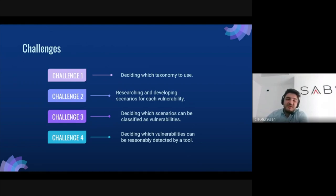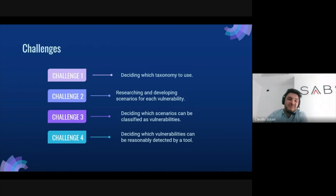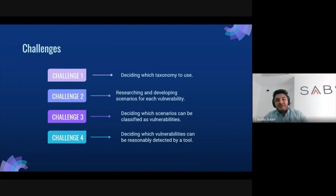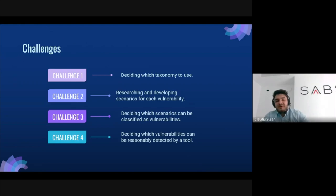We also had to decide which vulnerabilities can reasonably be detected by a tool, because there are some issues like logic errors that can only be seen by the human eye and we shouldn't expect any tool to detect those. There are also cases where we're not expecting the tool to signal an issue with 100% confidence, but more as a warning — like 'you might want to double check this.' For example, when using arrays, if the index might go out of bounds, we don't expect the tool to know for certain when it will, but we'd like it to say something like 'you're using an array here, you might want to double check it.'